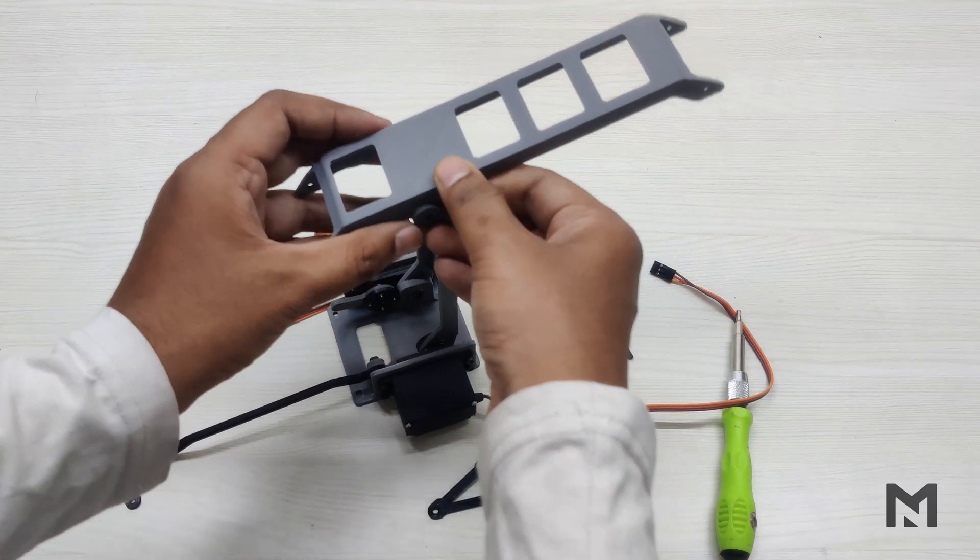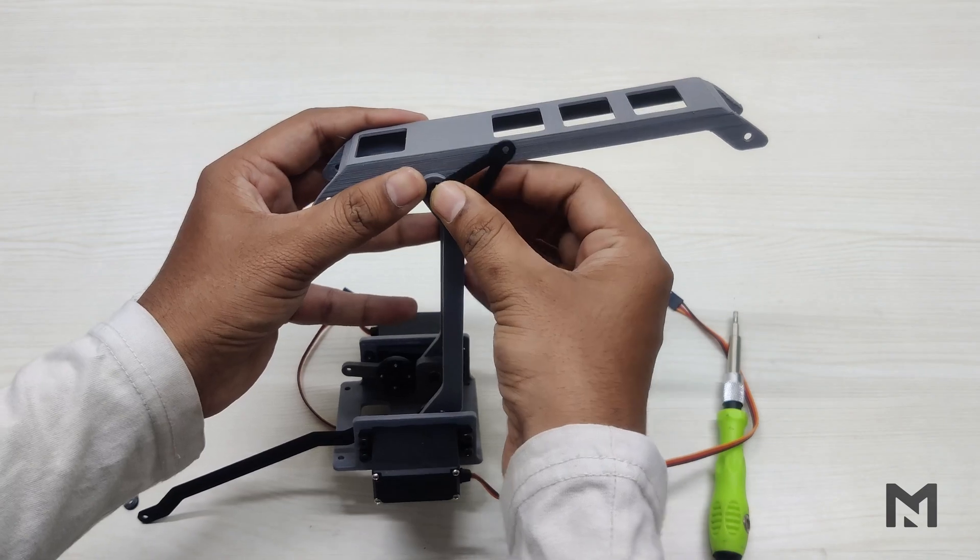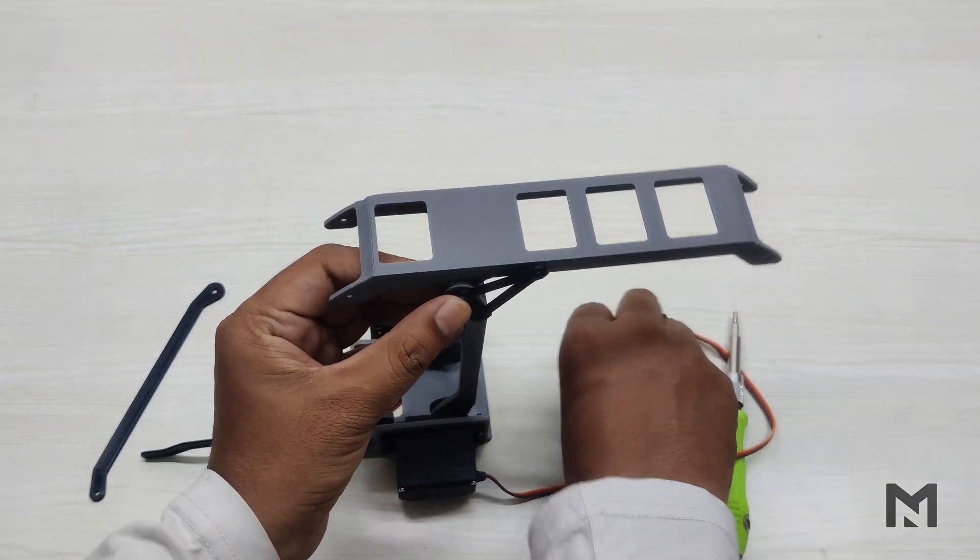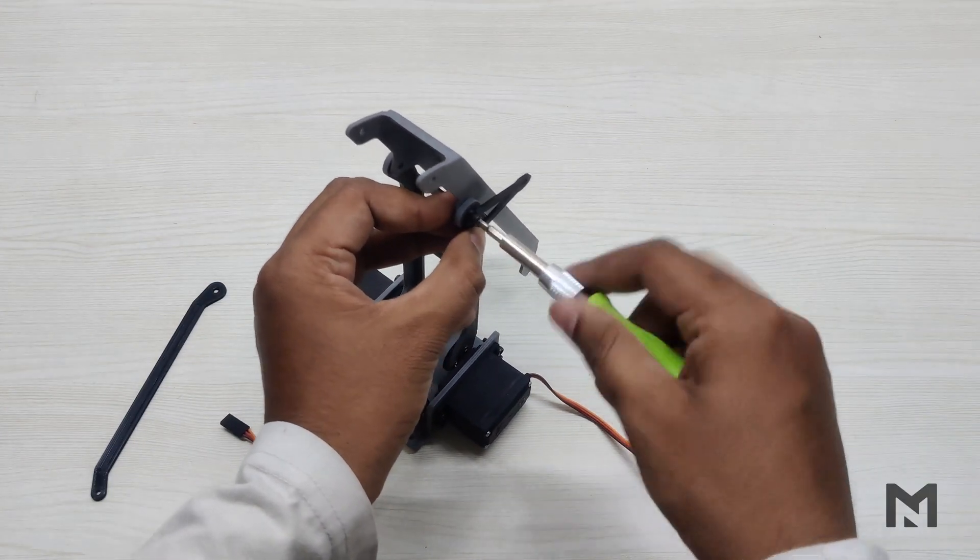Then take the horizontal arm and place it over the vertical arm. Then attach the triangular section beside both the arms using a 15mm screw. Use a nylock nut and tighten it. Maintain the resistance while tightening the screw.